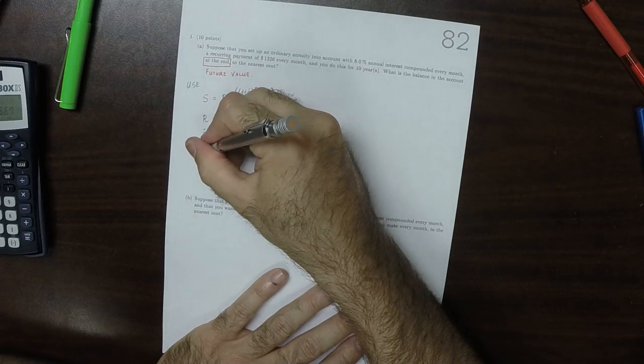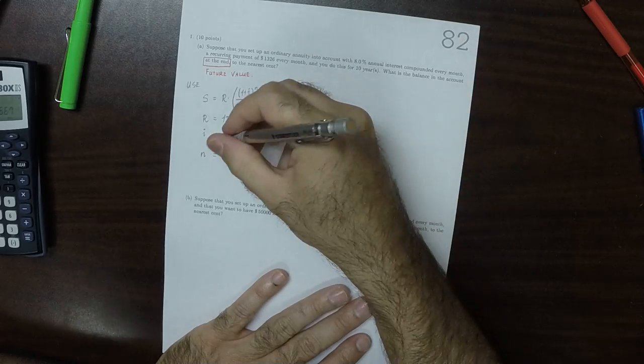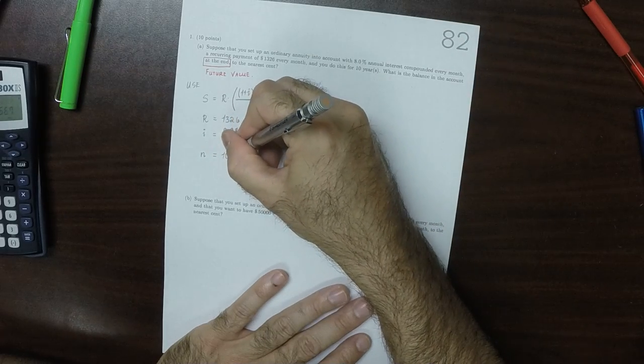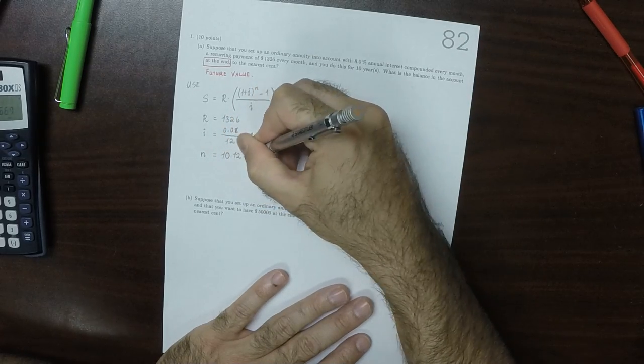And then N is 10 years, but that's 10 years multiplied by 12 months per year, so that's 120.